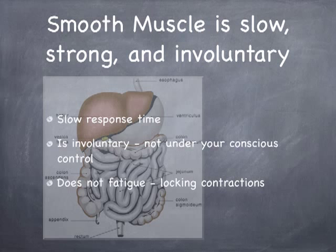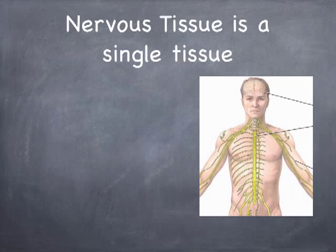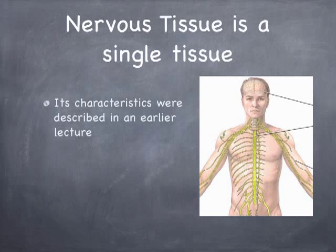So those are your three types of muscle and some of their characteristics. Obviously, when we get to the test, I'm going to ask you some questions along these lines. The last tissue type is nerve tissue. As we said before, this is just a single tissue — there aren't different types of nerve tissue; it's all one thing.